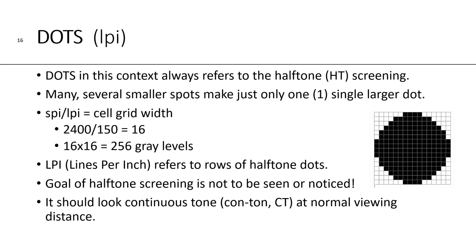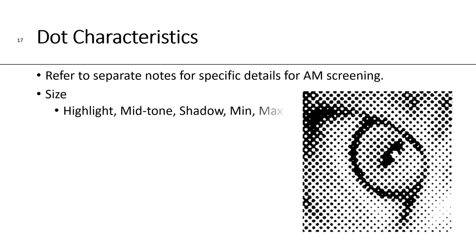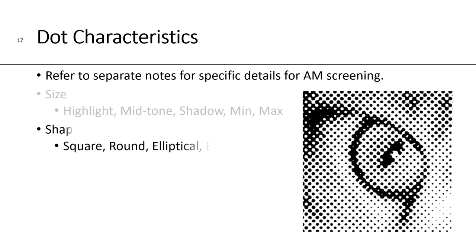LPI, lines per inch, always refers to halftone dots. The goal of halftone screening is not to be seen or noticed — it should look continuous tone, contone or CT, at a normal viewing distance. All halftone dots have four characteristics. They have size, which can be small highlights, large shadow dots, with midtones halfway between, and of course a minimum and maximum dot. Then you have the shape of the dot, which you can choose from your RIP — typically a square dot, round dot, elliptical, or euclidean.